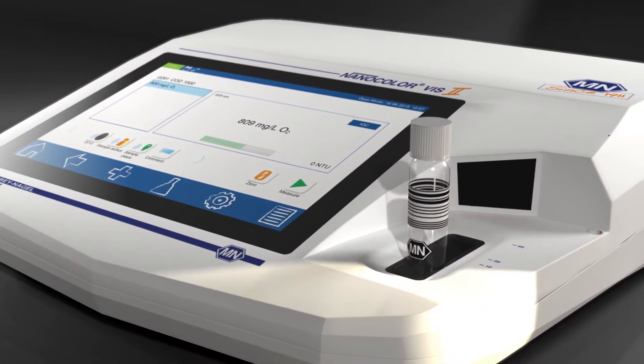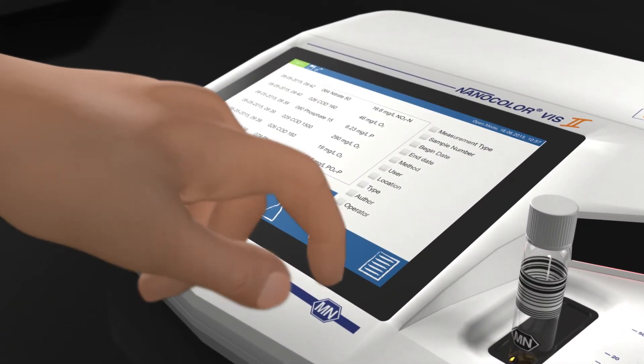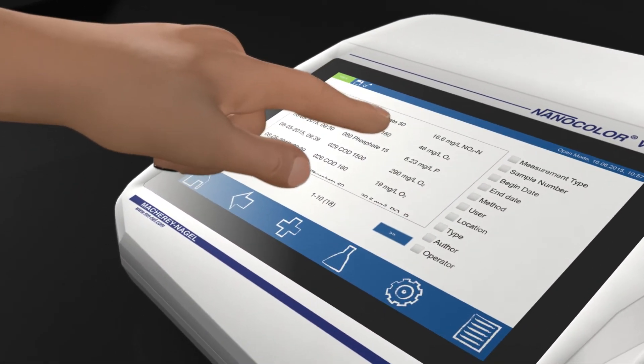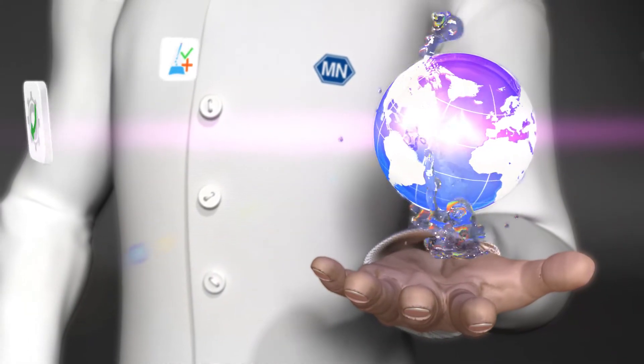Photometric water analysis has never been easier and more reliable. The VIS2 is designed to deliver more safety and accuracy when analyzing the most important substance in the world.